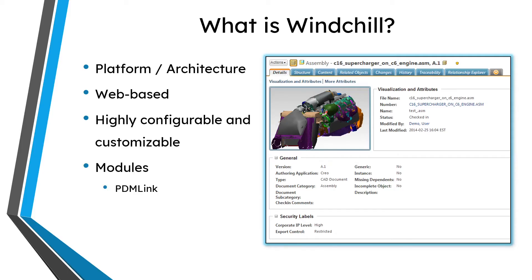There are a number of different modules to Windchill. Some of the main ones include PDM Link — PDM stands for Product Data Management — which is for managing your CAD data and related processes. There's also MPM Link, which is Manufacturing Process Management, for creating your manufacturing bills of material and process plans. Another major one is Project Link, used for collaboration with your partners, vendors, suppliers, and customers. There are many more modules because Windchill is a platform upon which a whole bunch of different applications are built.